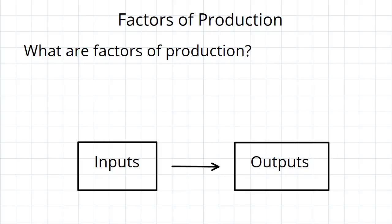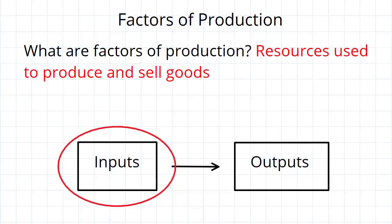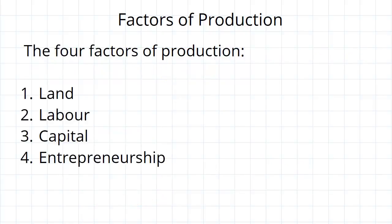The inputs are our factors of production, and they are what we are now going to start focusing on. So we can say that factors of production are resources used to produce and sell goods. In other words, they're just inputs into the production process.